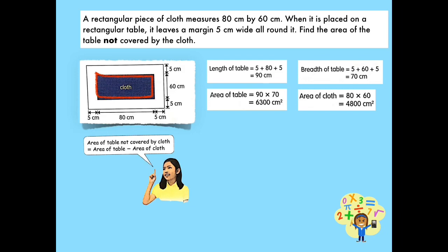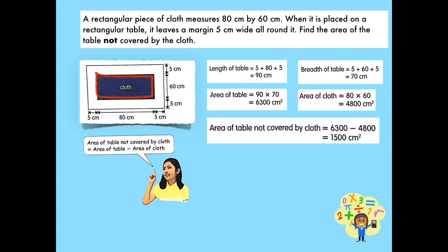Since we already know the area of the rectangular table and the area of the cloth, we can already find the area of the table that is not covered by the cloth. In order to do that, we will be subtracting the area of the table and the area of the cloth. So, 6,300 minus 4,800 is equal to 1,500 square centimeters. The area of the table not covered by the cloth is 1,500 square centimeters.